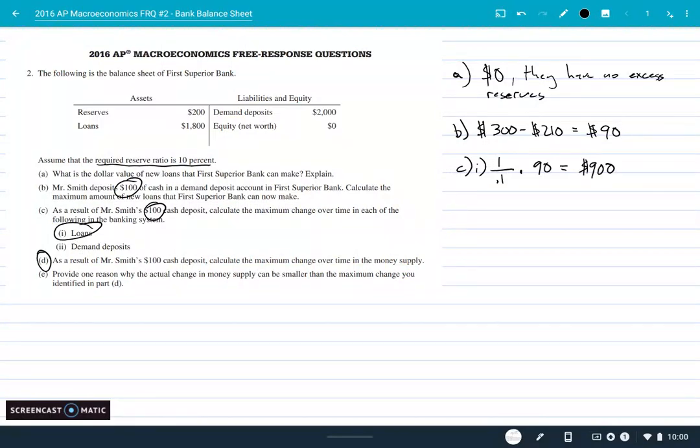And we get $900 in new loans after it's gone through the banking system over and over again. Next question is what is the maximum change in the demand deposits? Well, all of this money, all this 900 that was lent out, is going to end up being deposited because somebody borrows it to buy something and then the person who they bought it from is going to take that money and put it in the bank. So we're going to get $900 of new demand deposits, but if you include the $100 from Mr. Smith, then I guess it's a thousand.